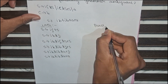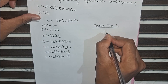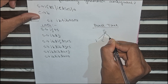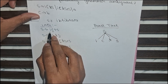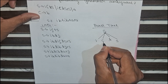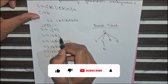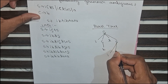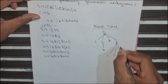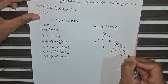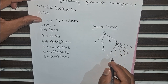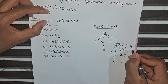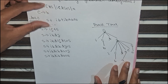Now I will draw the parse tree for LMD1. Our initial variable is S. From S I have taken i c t S. Then I put c as b. After that S I have taken i c t S e S. Then I put this c as b, and this S as b, and this S as a. So this is the parse tree for LMD1.